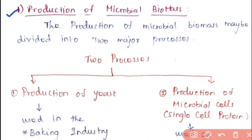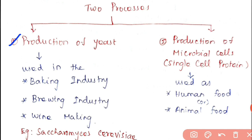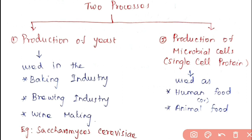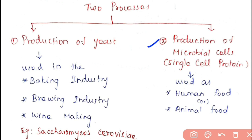The production of microbial biomass may be divided into two major processes. One is the production of yeast, which is used in the baking, brewing, and wine-making industries. The microbial cell itself, used as human food or animal feed, is also known as single cell protein.